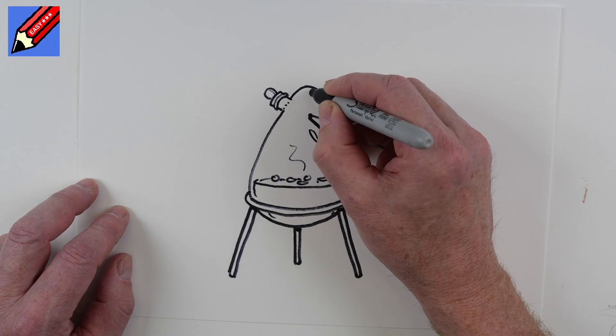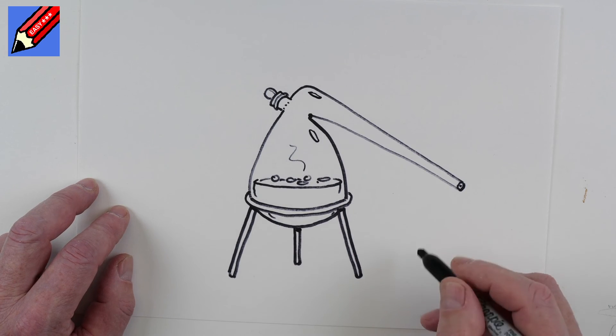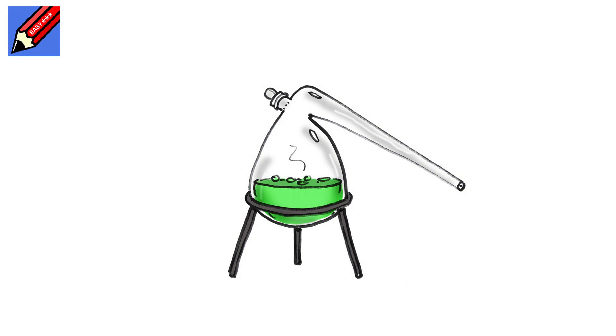You can put a little bit of shininess on the glass there just to help like that. And there you go, how to draw a chemistry retort flask. Thanks for watching and make sure you are